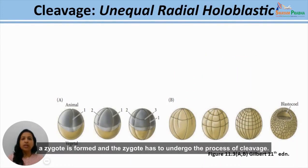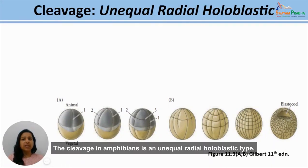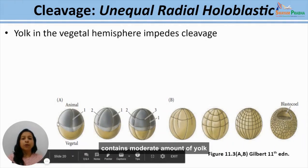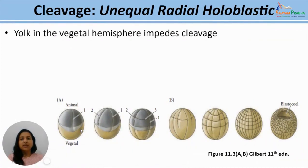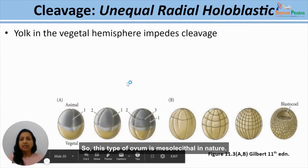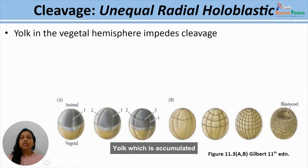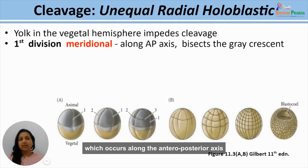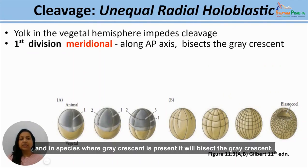After fertilization, a zygote is formed which undergoes cleavage. Cleavage in amphibians is an unequal radial holoblastic type. The ovum is mesolecithal, with most yolk concentrated in the lower vegetal half. The first cleavage is meridional, occurring along the anterior-posterior axis and — in species where the gray crescent is present — bisecting the gray crescent. The second cleavage is also meridional, at right angles to the first.